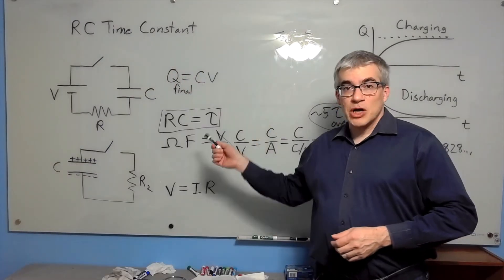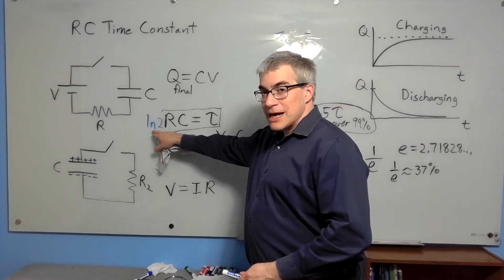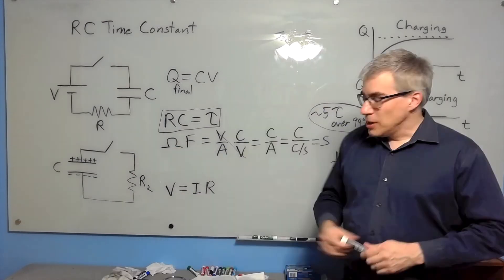With radioactivity, we talk about a half-life. Is the time constant a half-life for an RC circuit? Close. If you multiply by natural log two, it would be the half-life, but it's not.